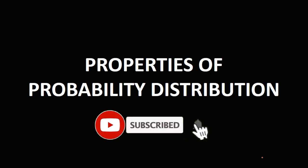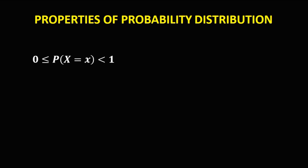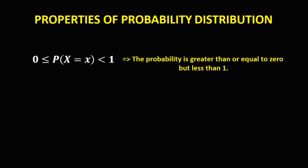So these are the properties of probability distribution. The first one: all probabilities are greater than or equal to 0 but less than 1. Since greater than 0, therefore all probabilities are positive.